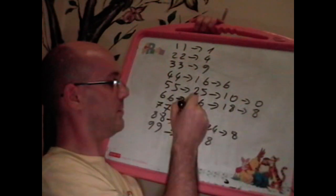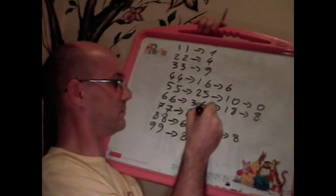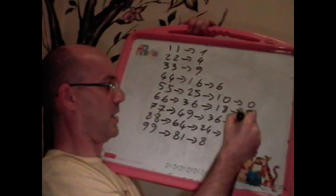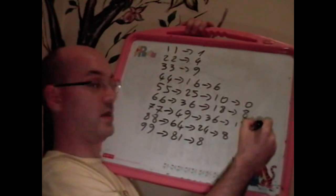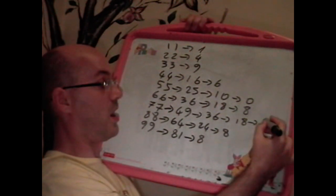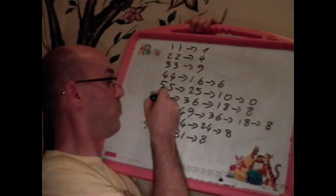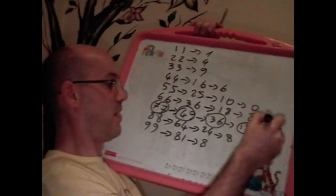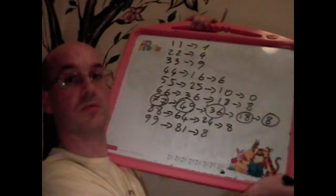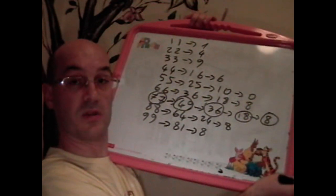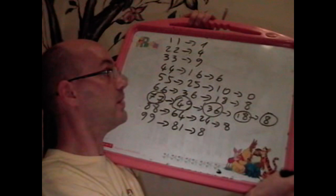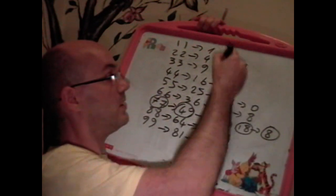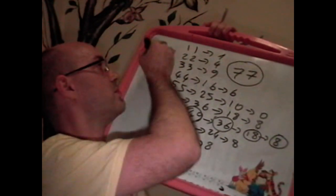77: 7 by 7 makes 49, 4 by 9 is 36, 3 by 6 is 18, and finally 1 by 8 is 8. You get a one, two, three, four, and five-step chain, which is the longest among the numbers from 1 to 99. So 77 is the answer because the answer is unique, so we could find it easily.